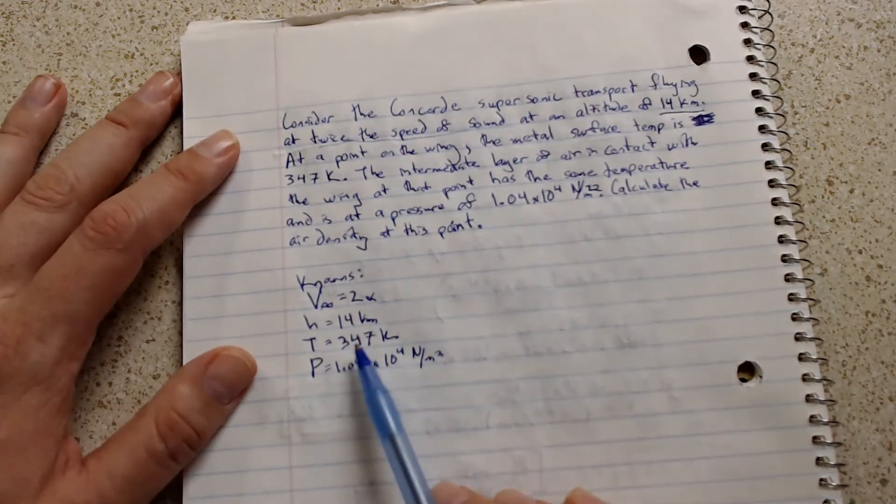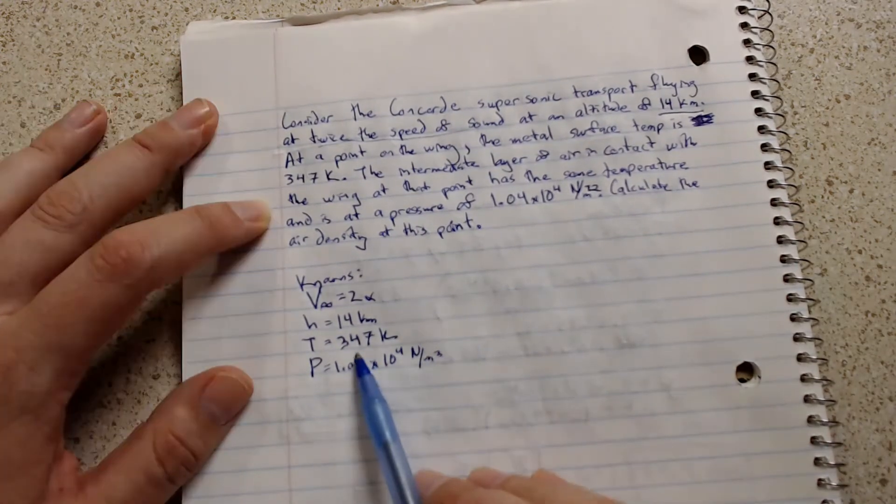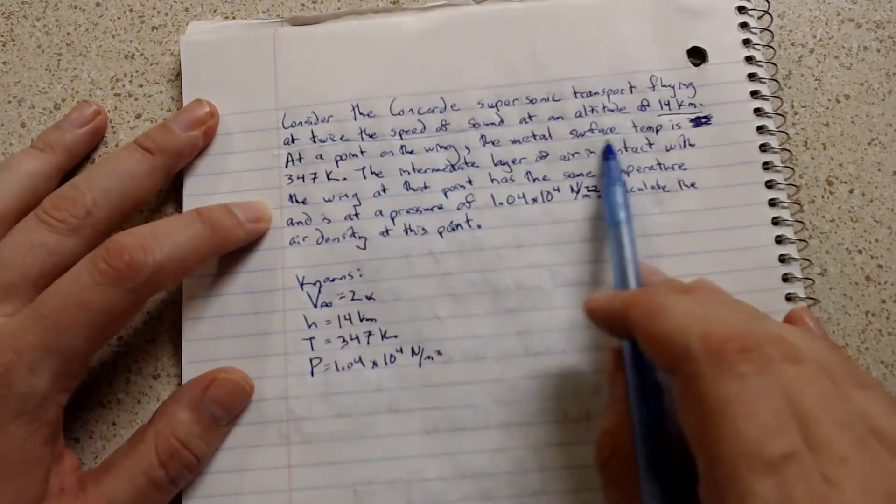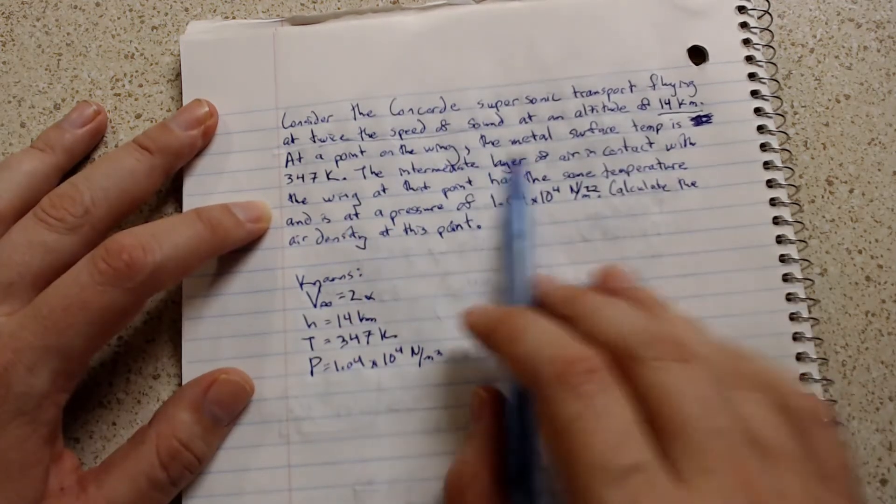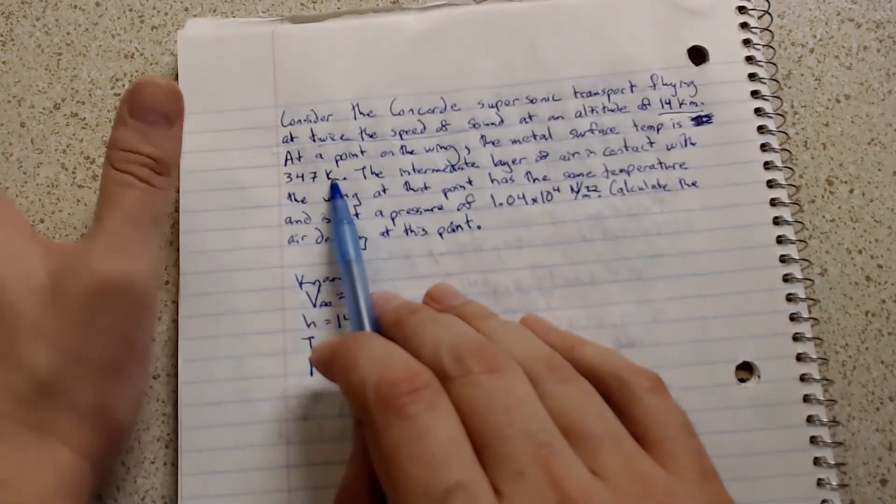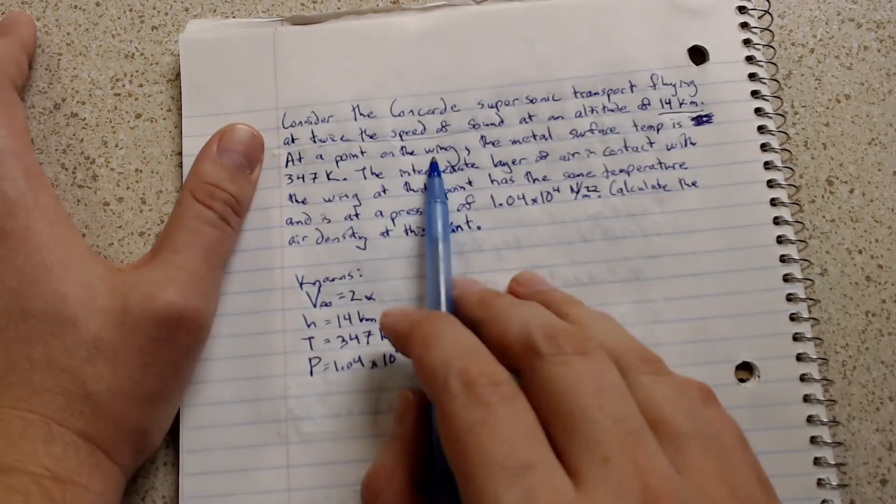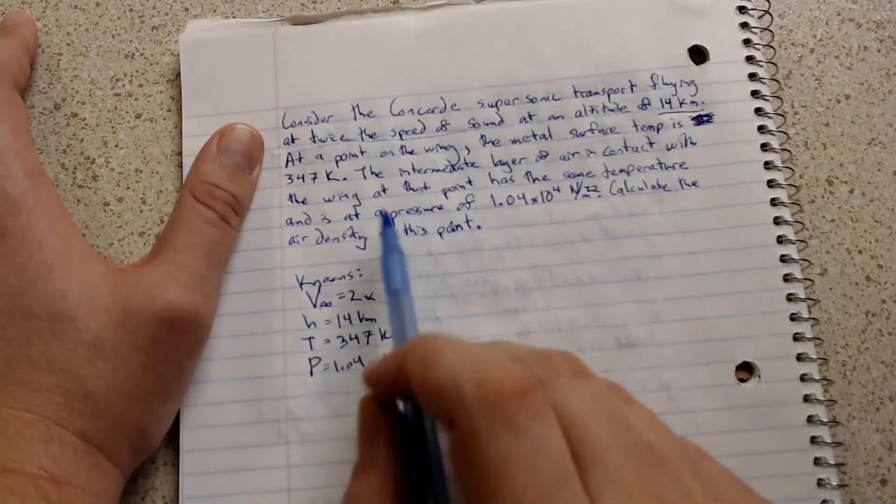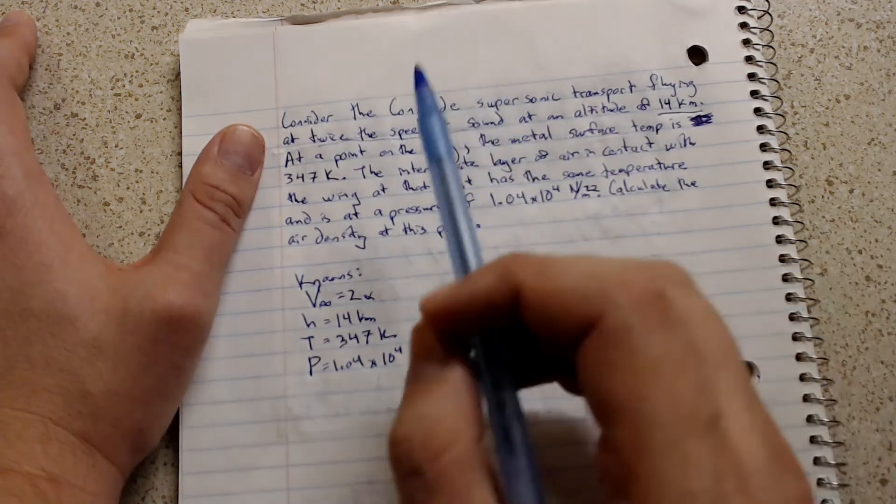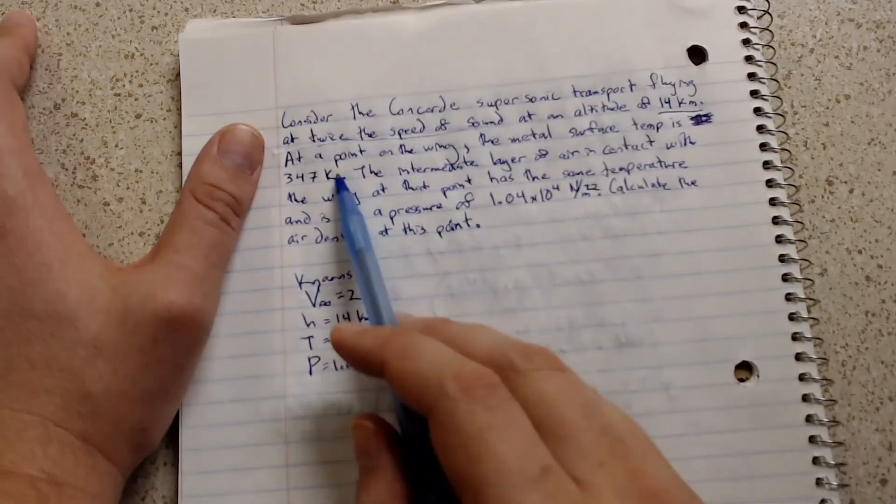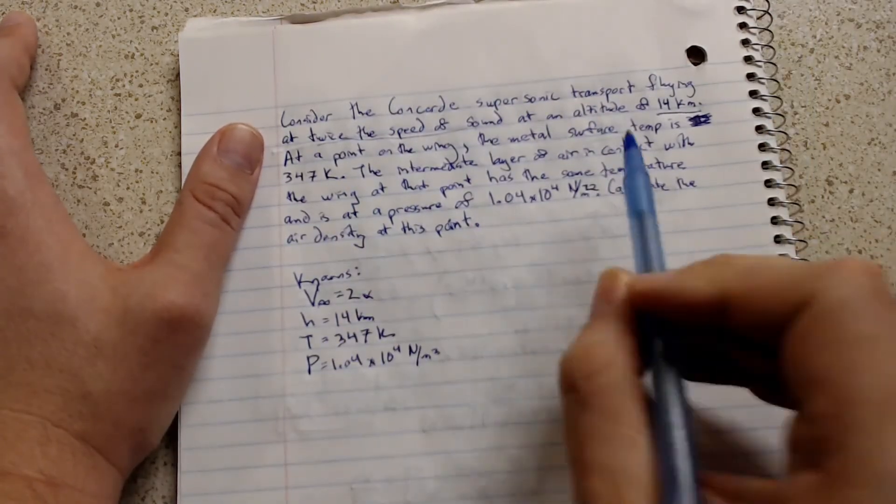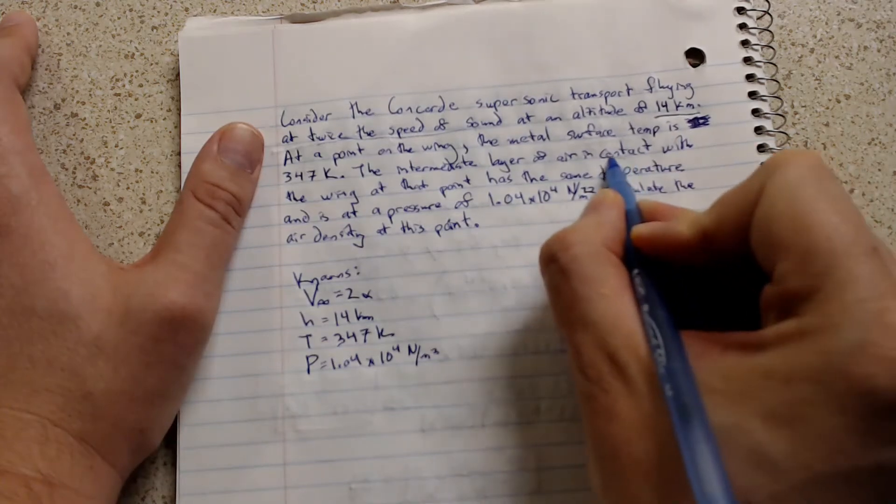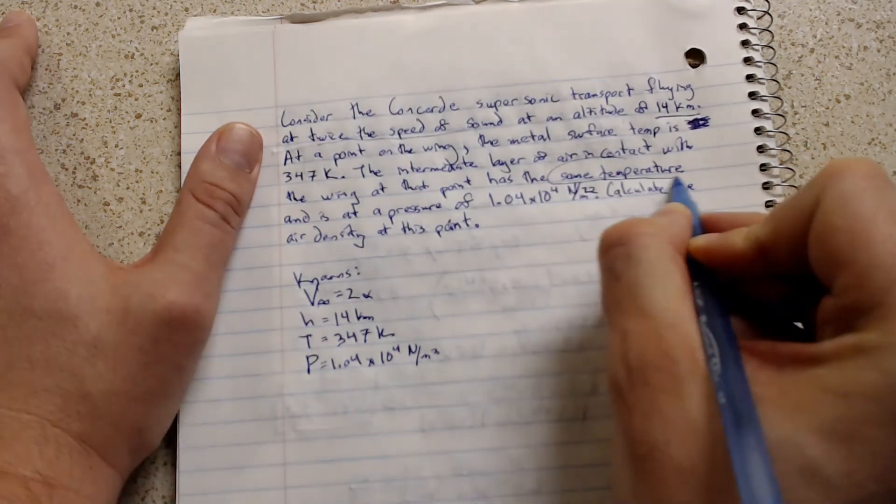Now, a quick note about this temperature. You'll notice that they gave a temperature of the metal surface at a point on the wing. They didn't give the temperature of the air at that same point. However, what they did was they specified that the air in contact has the same temperature.